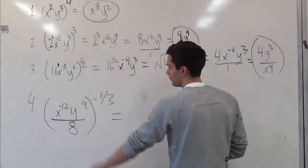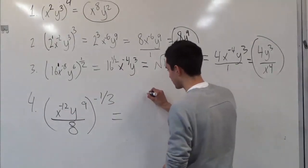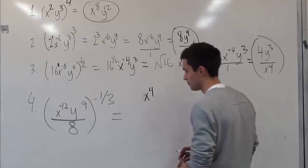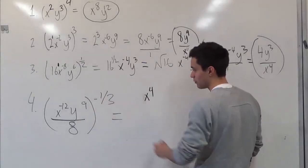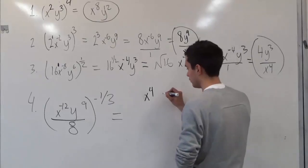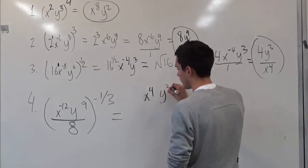So negative 12 times negative 1 over 3, that will give us x to the positive 4. 9 times negative 1 over 3, that would give us negative 3. So in terms you would have y to the negative 3.